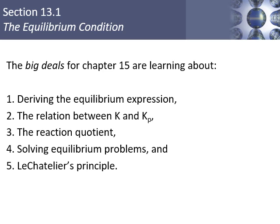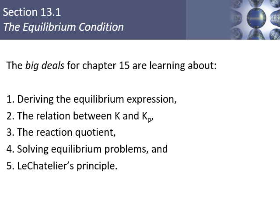For chapter 15, we're talking about equilibrium primarily — that's by far the main topic. We'll look at how to do equilibria expressions, the relationship between Kc and Kp, different kinds of constants, and the reaction quotient, which is kind of like the equilibrium constant but doesn't happen at equilibrium — abbreviated with a Q. And then solving equilibrium problems and Le Chatelier's Principle.